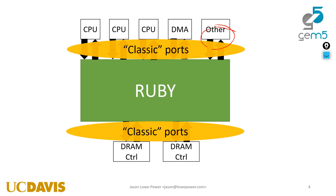Any kind of object with a master port can send things into Ruby. For instance, a GPU model — like GEM5 GPU — can talk to Ruby as long as it sends requests over a master port. On the other side, you can put any DRAM controller you want: DDR3, DDR4, GDDR controllers, whatever. In theory, you could even put a classic cache there and have a mixture of classic caches in Ruby, though that hasn't been tested.